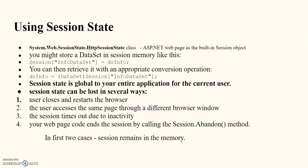To create a session state object, the class System.Web.SessionState.HttpSessionState is used to create session objects. For example, to store data: Session["info"] = dsinfo; and to retrieve it: dsinfo = (DataSet)Session["info"]. We will see in the next video how to create a session and how to retrieve values from it.